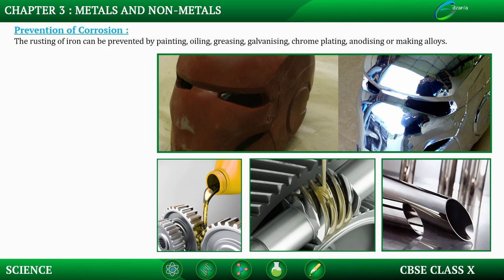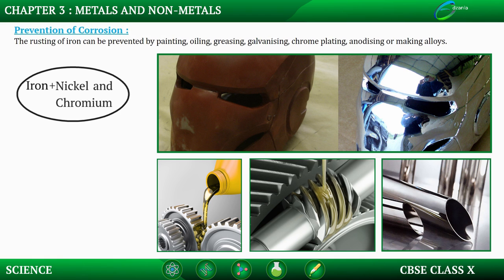Making alloys is a very good method of improving the properties of a metal. For example, iron is the most widely used metal but it is never used in its pure state, because pure iron is very soft and stretches easily when hot. If it is mixed with a small amount of carbon it becomes hard and strong. When iron is mixed with nickel and chromium we get stainless steel, which is hard and does not rust. An alloy is a homogeneous mixture of two or more metals, or a metal and a non-metal.